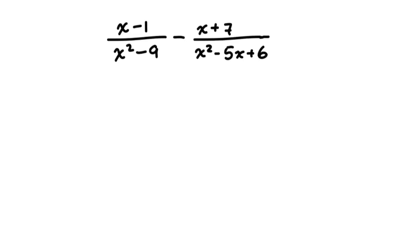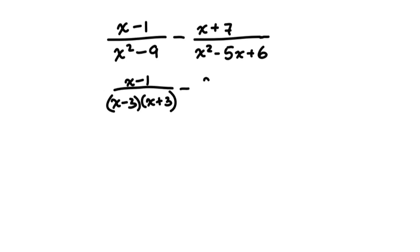Now let's see how we can subtract rational expressions. In this case, our denominators are in standard form, and before we do anything, we need to factor them. So let's factor the denominators. The first denominator factors as x minus 3 times x plus 3 — this is a difference of squares. For the second denominator, we need two numbers that multiply to 6 and add to negative 5, which are negative 3 and negative 2. So it factors as x minus 3 times x minus 2.